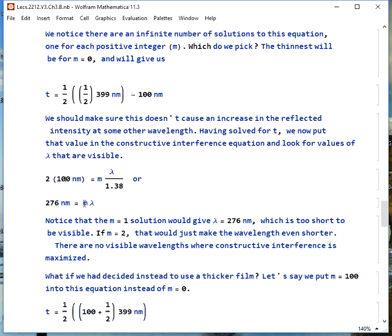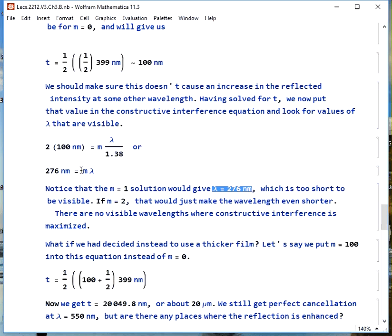So we plug it in just as we would expect. We know our t now. We plug this in and we get that if the product of m times lambda is 276 nanometers we'll get something a color that we've made it worse for. The m equals 1 solution would give us lambda is 276 nanometers which is deep in the ultraviolet and not visible. If m equals 2 that means the wavelength would get even shorter it would be 138. So higher values of m won't push this into the visible. This means we don't have any visible wavelengths where we get maximum constructive interference.